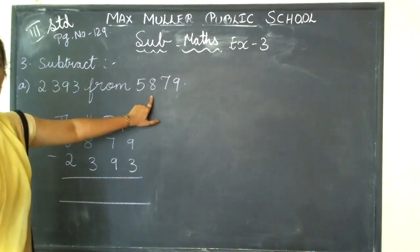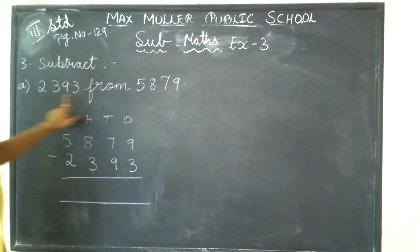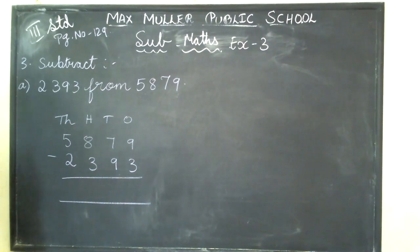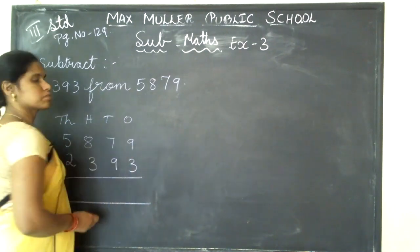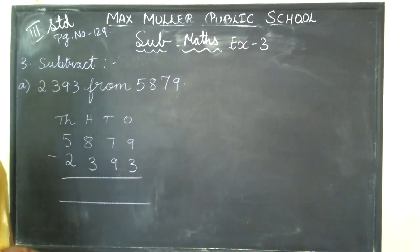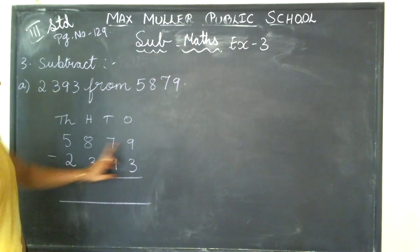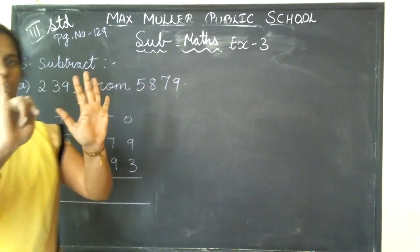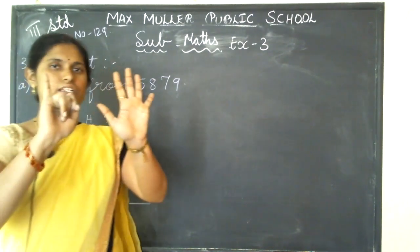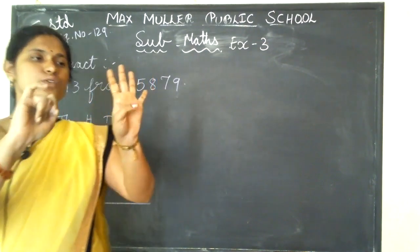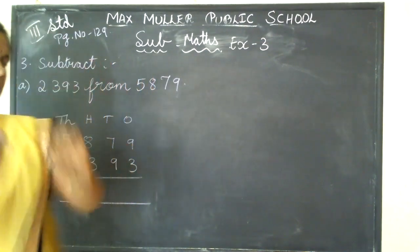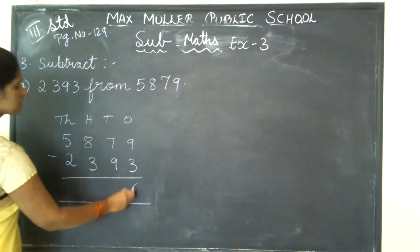When they use 'from', you write the bigger number first, then write the smaller number. So, how do you subtract? From the ones place you are going to start. 9 minus 3 — from 9 if I minus 3, how much will you get? Count here: 1, 2, 3, 4, 5, 6. So the answer is 6.